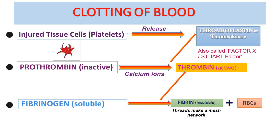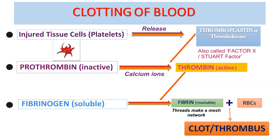These fibrin threads are sticky and form a network or mesh at the site of the wound. Red blood cells are trapped in the network of fibrin, and the network then shrinks and squeezes out the rest of the plasma in the form of a clear liquid called serum. The solid mass which is left behind is called a clot or thrombus.